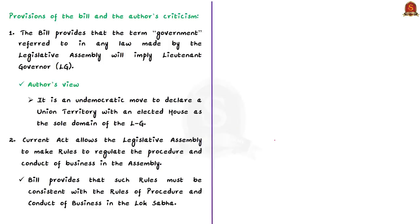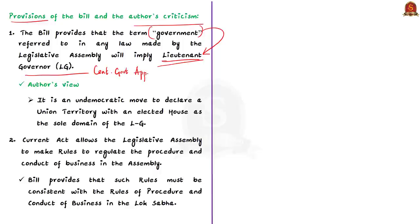The bill provides that the term 'government' referred to in any law made by the legislative assembly will imply 'Lieutenant Governor.' In simple words, the bill seeks to replace the word 'government' with 'Lieutenant Governor,' who is a central government appointee. The author criticizes this replacement because Delhi is a union territory with an elected house, and he opines that it would be an undemocratic move to declare a territory with an elected house as the sole domain of the Lieutenant Governor.